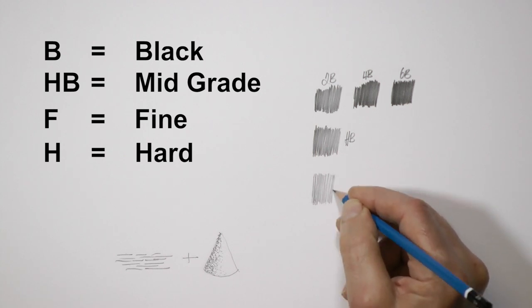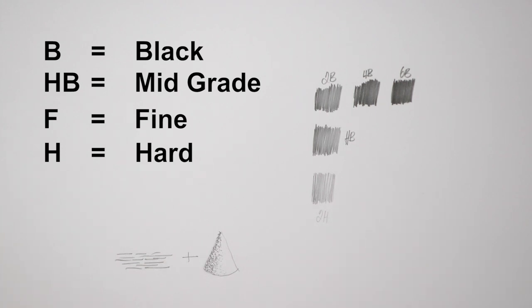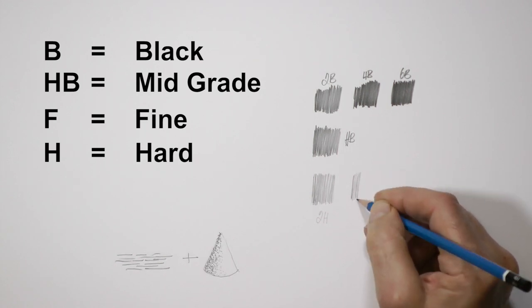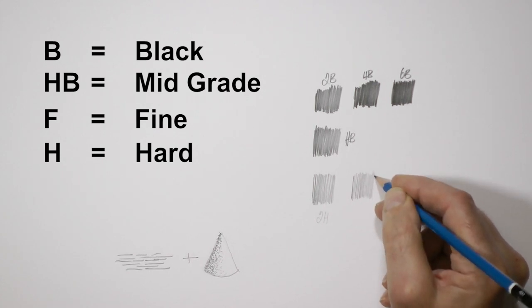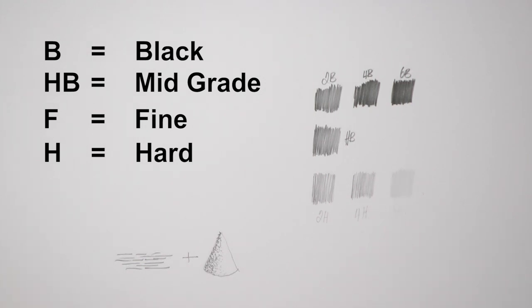As the number goes higher, the B grades become softer and therefore darker. The H grades become harder and progressively lighter. HB in the middle is, if you like, neither hard nor dark. It's a neutral in the center.